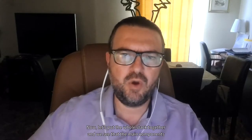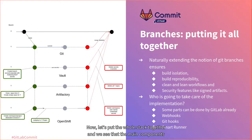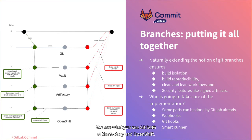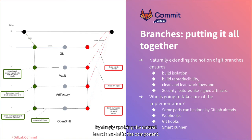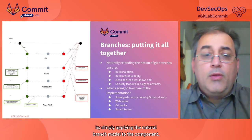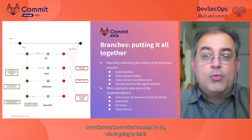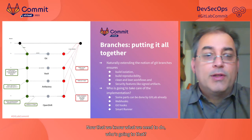Now let's put the whole stack together. We see that the main components of the pipeline are following the branch paradigm from Git. From top to bottom: Git, Vault, Artifactory, and OpenShift. This stack takes care of the challenges we mentioned — like build isolation — by simply applying a natural branch model to each component. Now that we know what we need to do, who's going to do that?